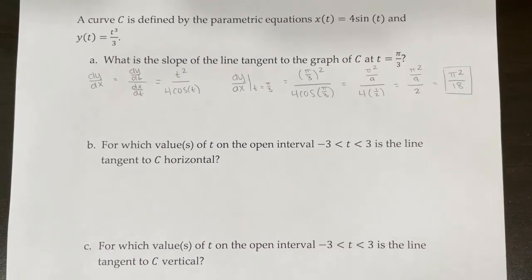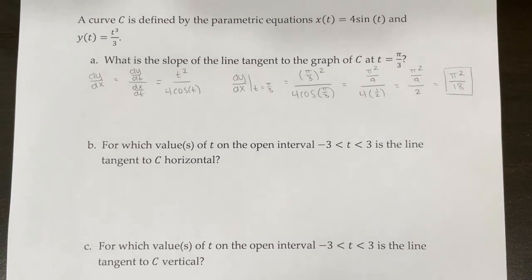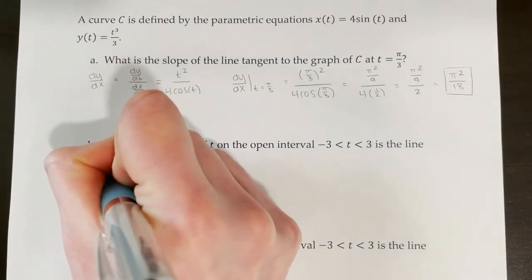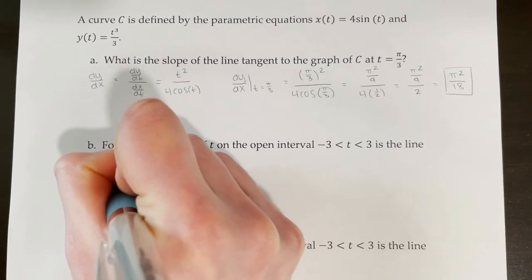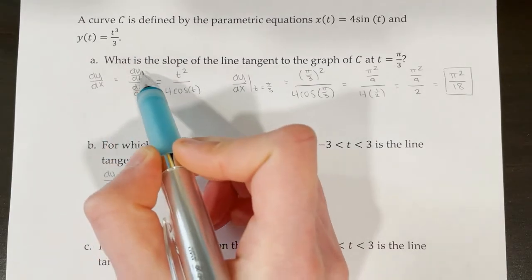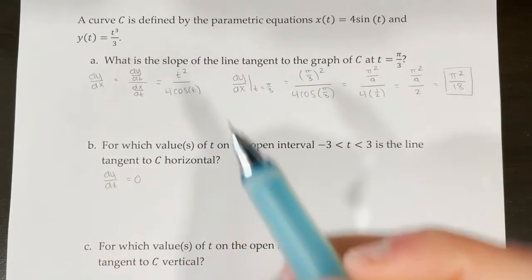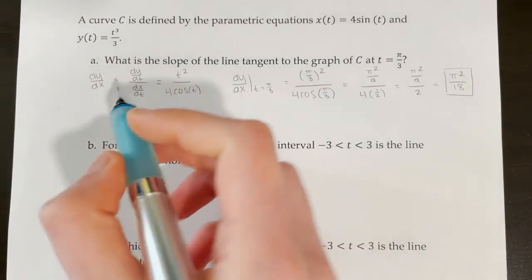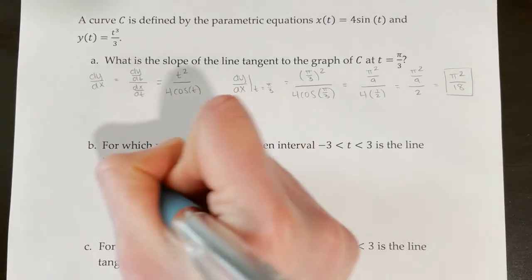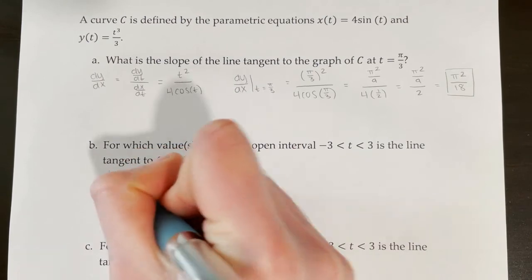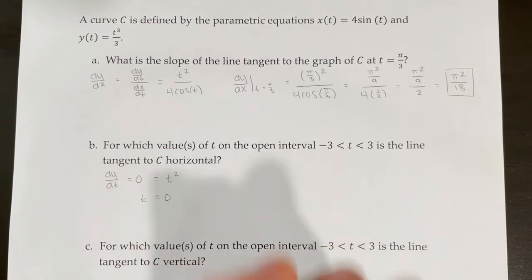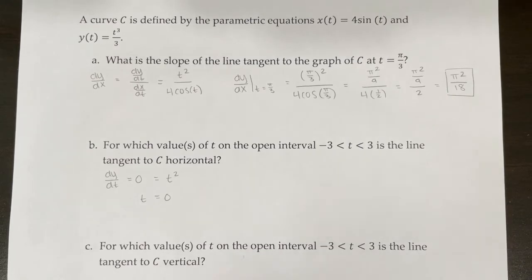Part B: For which values of t on the open interval −3 < t < 3 is the line tangent to C horizontal? A horizontal tangent requires dy/dt = t² = 0, so t = 0. At t = 0, the tangent line is horizontal.